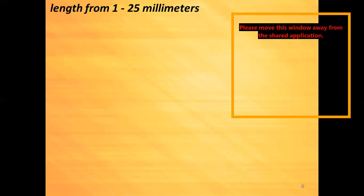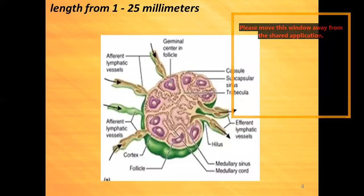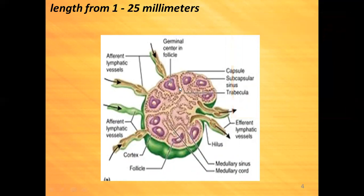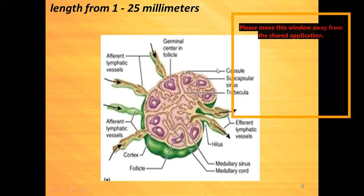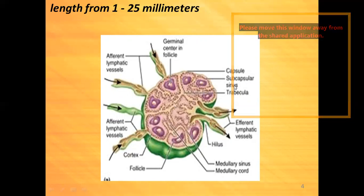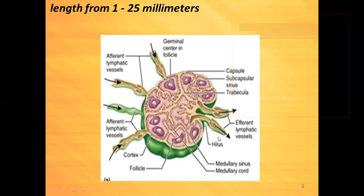The lymph node has a length from 1 to 25 millimeters. Here we can see the structure of the lymph node — the general anatomy we had learnt already. The afferents bring lymph to the lymph node where it is filtered, and through the efferent vessels it comes out. We can see the cortex, germinal center, capsule, subcapsular sinus, trabecula, hilum, medullary sinus, and medullary cords.